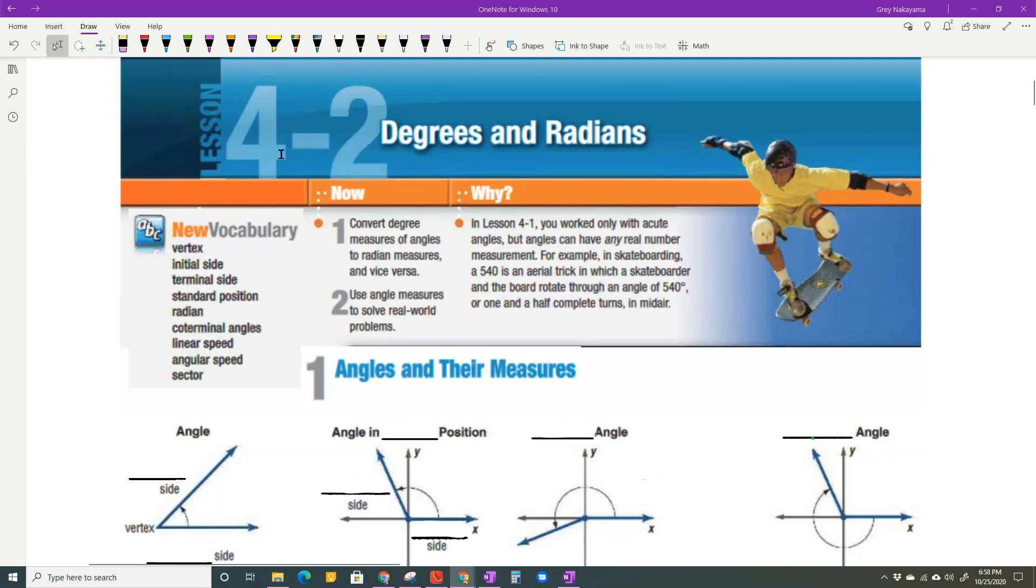Okay, today's lesson is 4.2a degrees and radians, and we're going to talk about angles and going back and forth between degrees and radians.